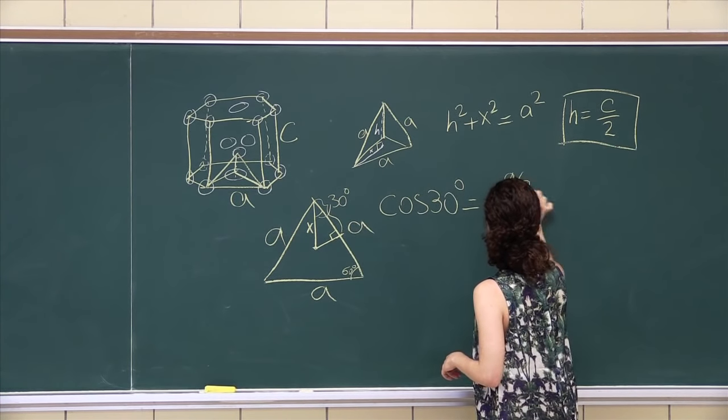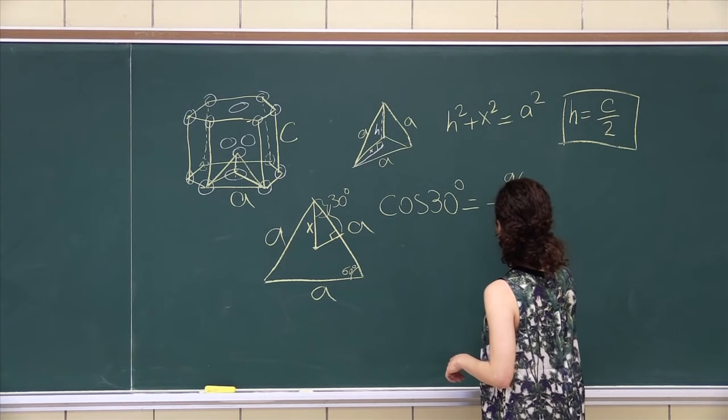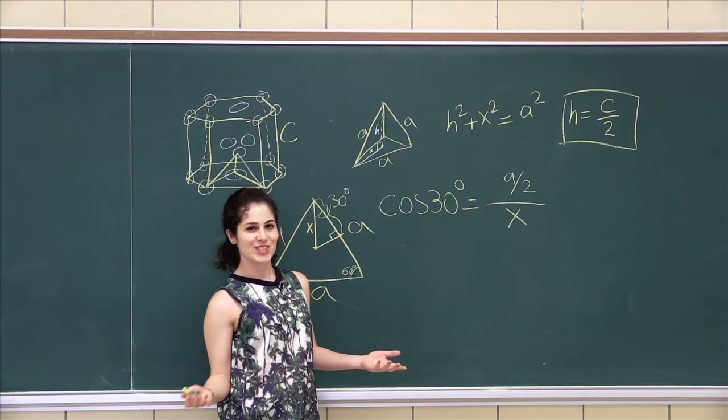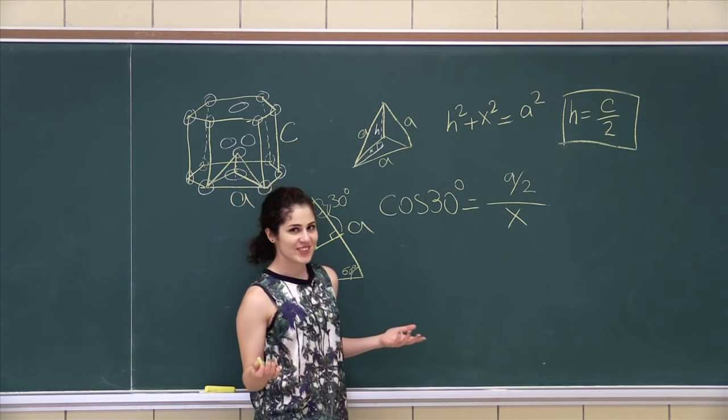Adjacent over hypotenuse. And if you know what cos 30 is, which you all should, it's actually root 3 over 2.